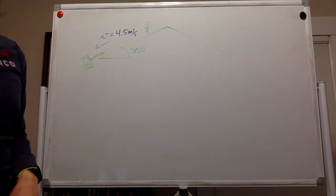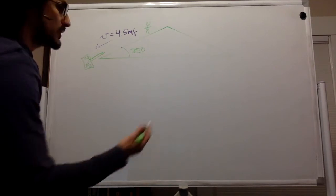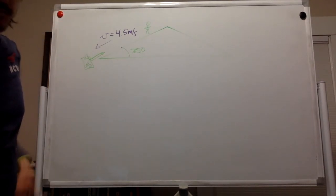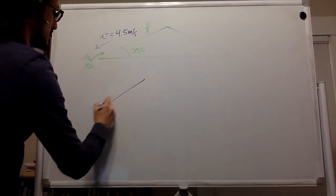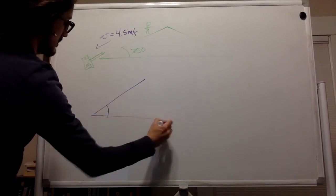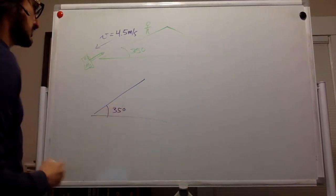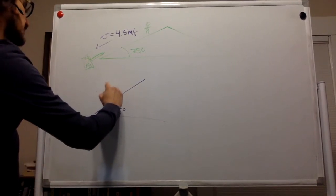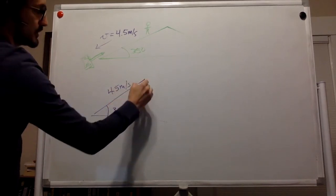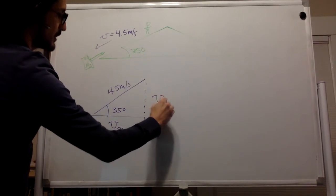So that's fairly easy. We essentially have this triangle and we know that the magnitude here is 4.5 meters per second and we want to know the x component and the y component.